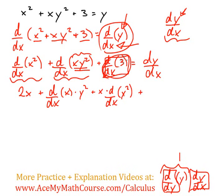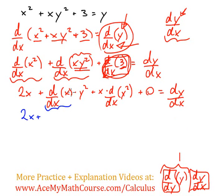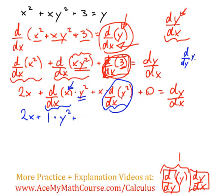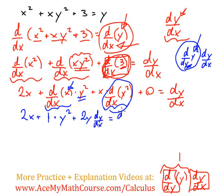The derivative of any constant with respect to x is just 0, and that's still equal to dy/dx. So that's just 2x plus — the derivative of x with respect to x is 1 — and we're multiplying that by y squared. Then we're adding x times d/dx of y squared. Remember, that becomes d/dy of y squared times dy/dx. The derivative of y squared with respect to y is just 2y, and we're multiplying that by dy/dx. That's equal to dy/dx on the other side, and the 0 is gone.